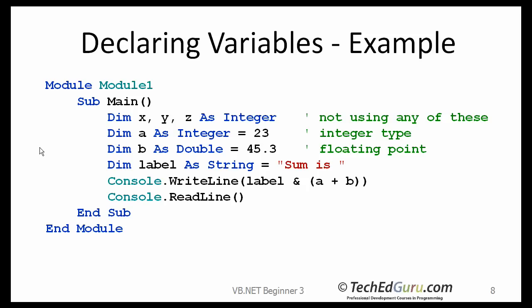Let's look at a few examples. On that statement, on the first statement, you are declaring three variables. X, Y, Z, they are all of the integer type. On the next line, you are declaring A as an integer type. But, while you are declaring it, you are also assigning a value to it. You are initializing that variable.